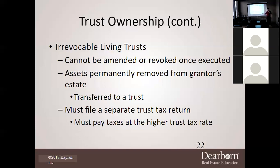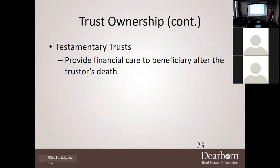That asset protection only works if it was set up well in advance — not the day before an accident. If the trust was created years ago and you get in a car accident today, your individual net worth is zero and the plaintiff gets nothing from you personally. But that only applies if the irrevocable trust was legitimately established long beforehand.